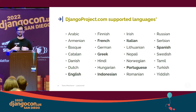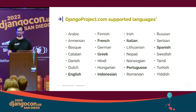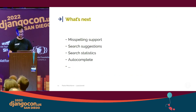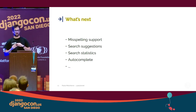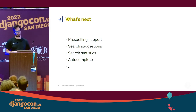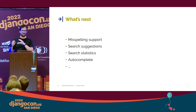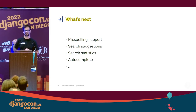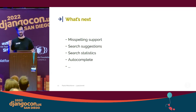Please join a translation team and start translating if you know one of these languages. New full-text search features are released every year in both Postgres and Django, and I hope to add all of them to the Django website search — like misspelling support, search suggestions, search statistics, autocomplete, and so on.